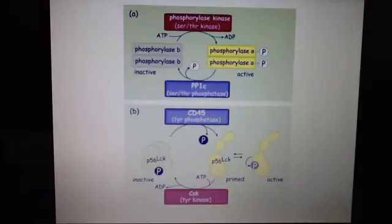Now let's look down at the bottom at the CD45 tyrosine phosphatase and at the bottom the CSK tyrosine kinase. We can notice the opposite thing happening. If you look at the inactive form of P56 LCK, we can notice that it's phosphorylated, but this is the inactive form.